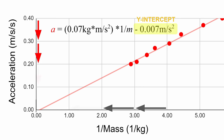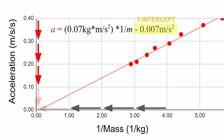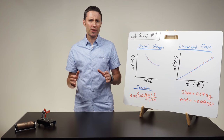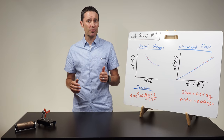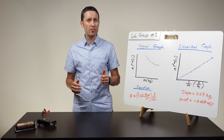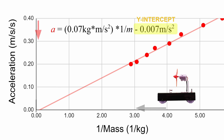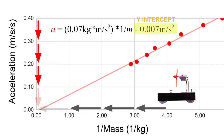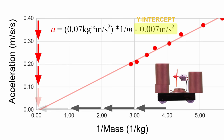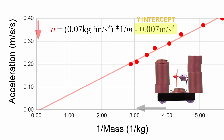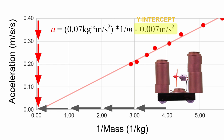Have the students think about what they would expect the acceleration to approach if the value of the inverse mass approached zero. It helps to have students first identify how the mass value would have to change to get the inverse mass value to approach zero. Through a guided conversation, students will be able to identify that the inverse mass value will approach zero as the mass gets larger and larger. As the fan cart's mass approaches a very large value, the acceleration would be expected to approach zero. Since the y-intercept can be reasoned away, it can be left out of the algebraic equation.